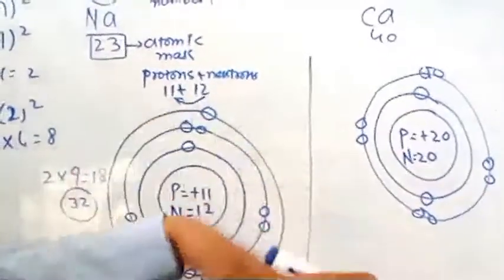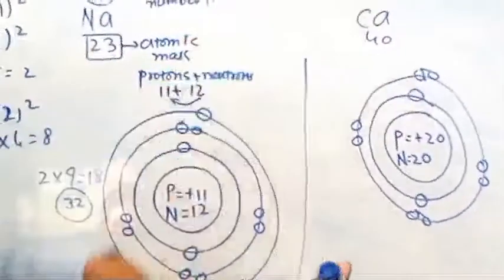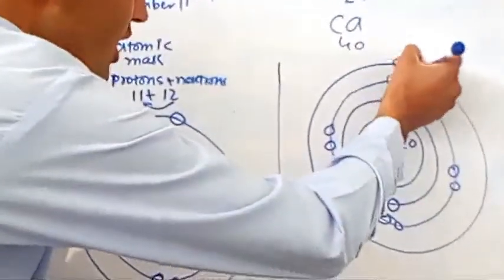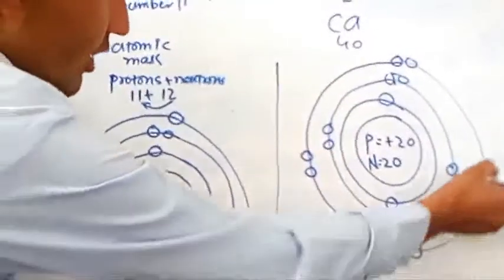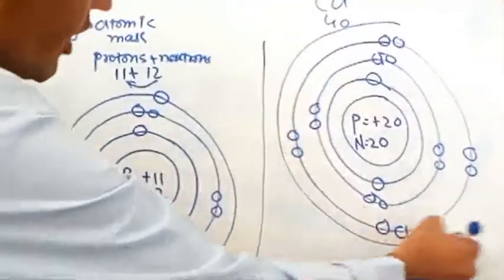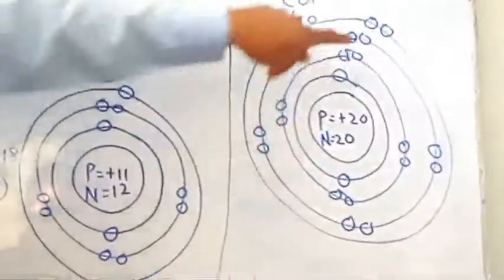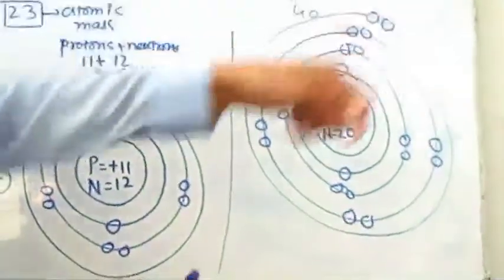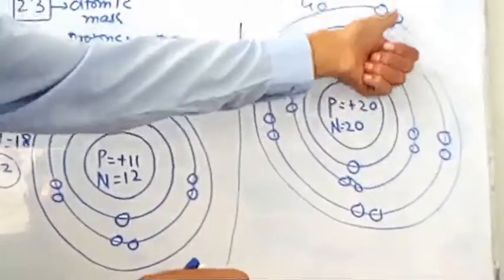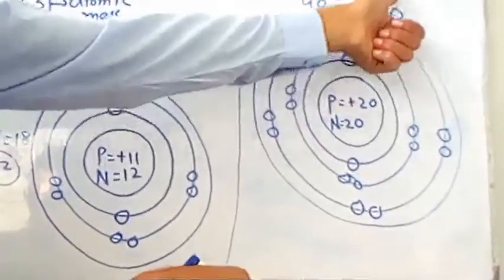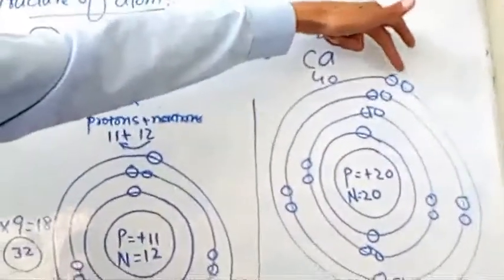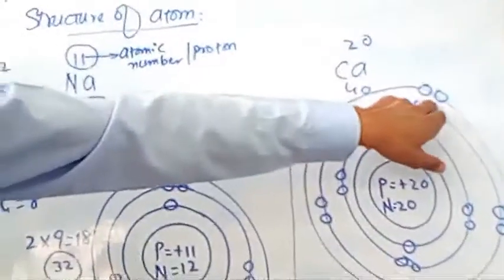So we should make a shell of 8 electrons, not 18, because we have only 10 electrons remaining. We distribute 8 electrons into the third shell, and only 2 electrons remain — those go into the last shell of calcium. Calcium has 2 electrons in its outermost shell because calcium belongs to the second group. The number of electrons in the outermost shell represents the atom's group number.